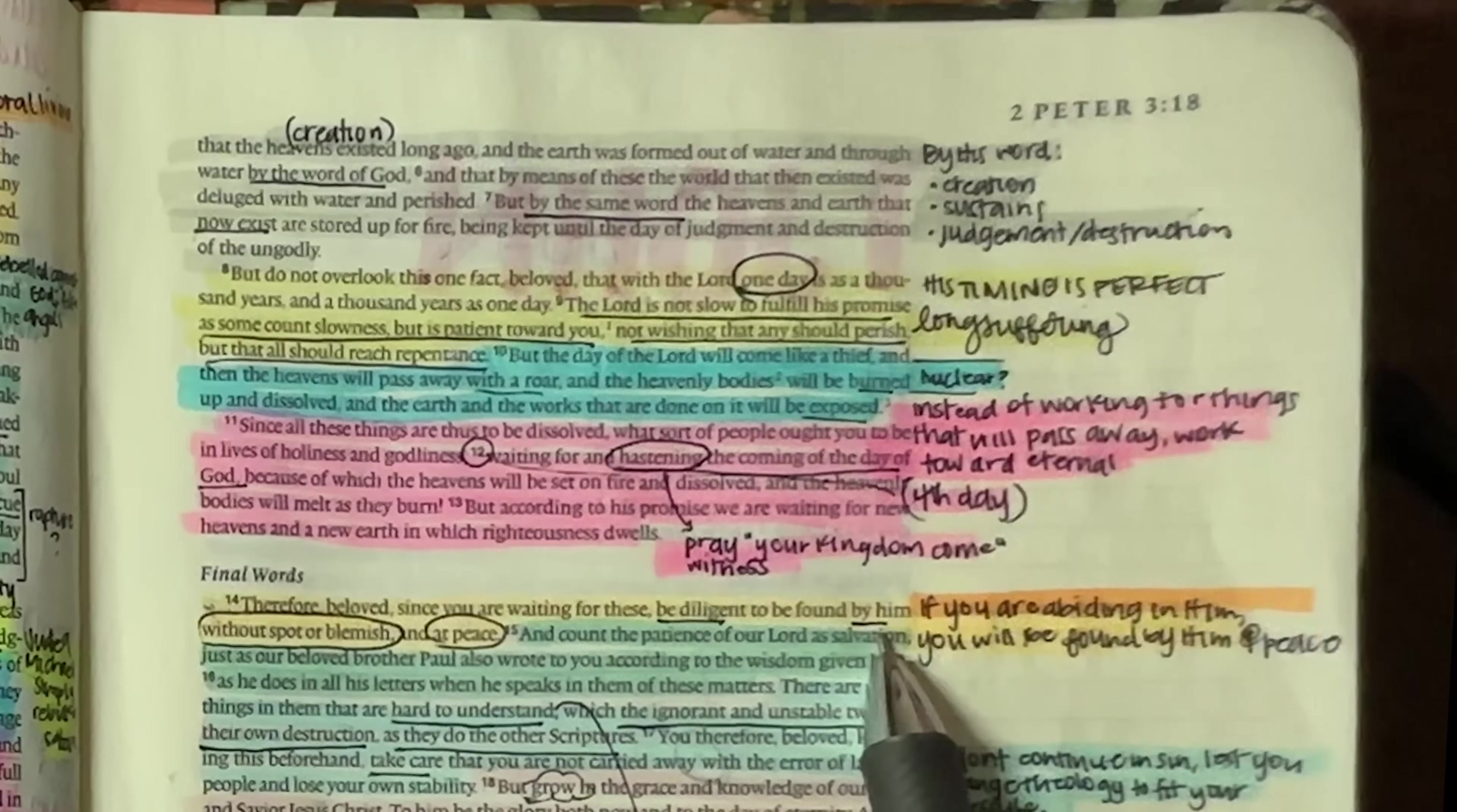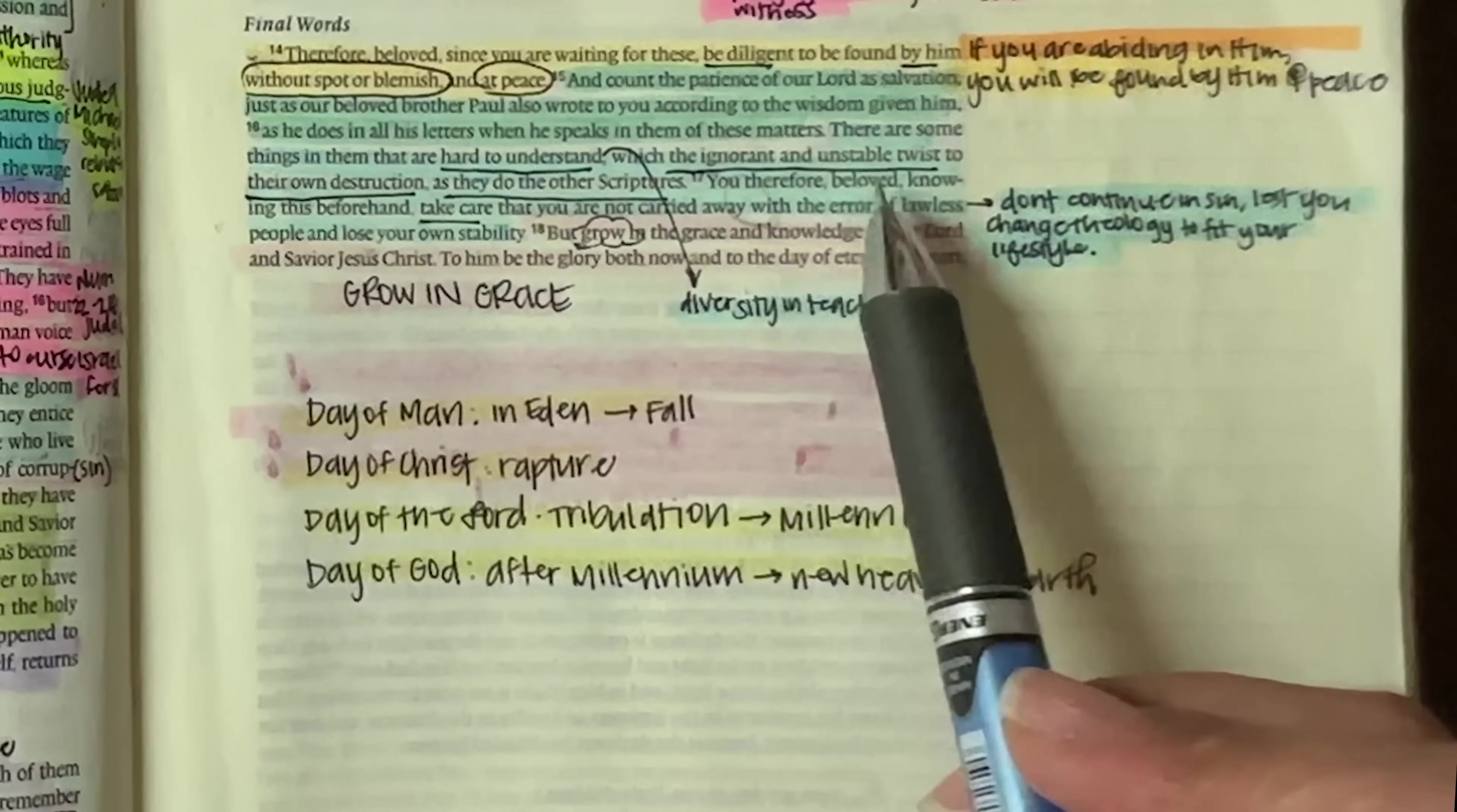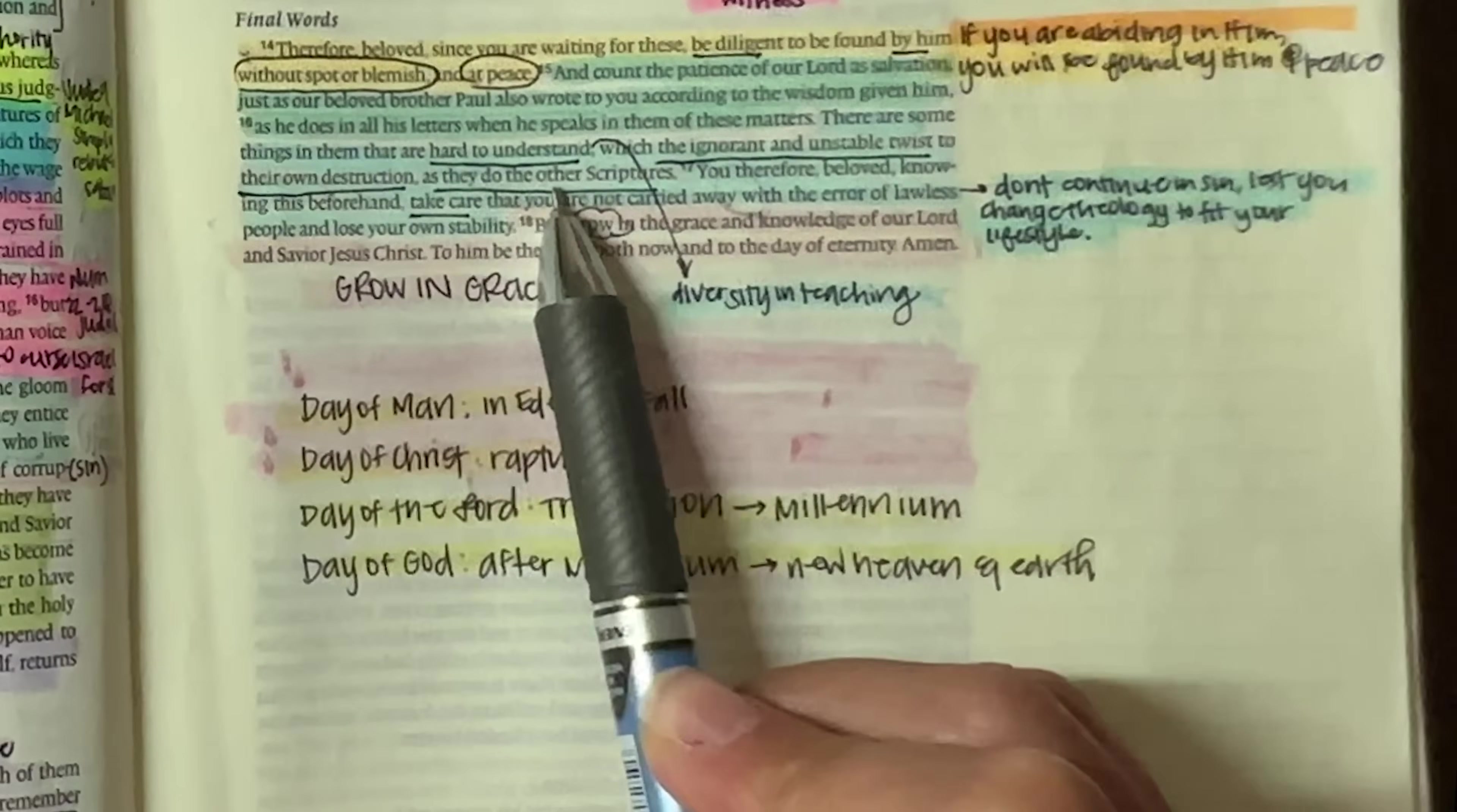Allow him to dwell within you so that you can be found there and you will be at peace because that prince of peace dwells within and count the patience of our Lord as salvation. Just as our beloved brother, Paul also wrote to you, according to the wisdom given him as he does in all his letters, when he speaks in them of these matters, there are some things in them that are hard to understand. And I kind of chuckled at this because I was like, wow, Peter, way to keep it real, you know? And it made me feel a little bit better because for those of us who struggled through some of Paul's letters and run on sentences, then you will feel a little better that Peter also struggled to understand them.